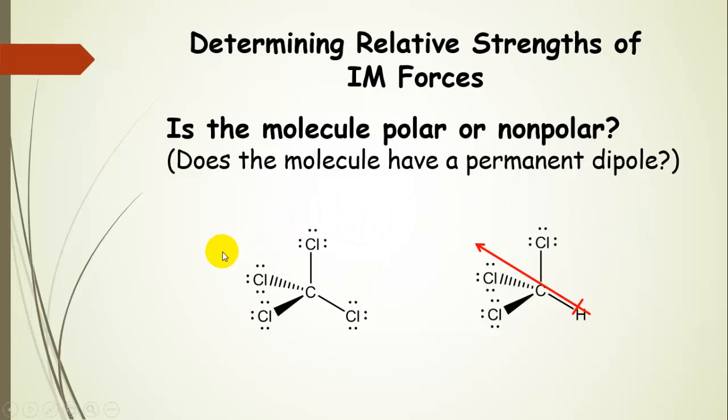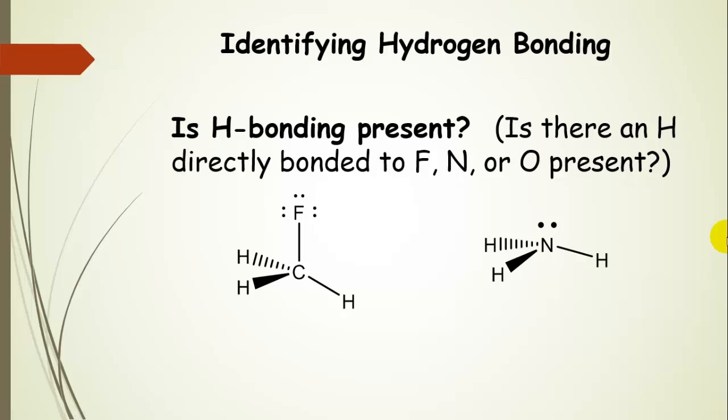This guy doesn't have dipole-dipole interactions, just dispersion forces. This one has dipole-dipole interactions. Another issue is identifying hydrogen bonding. What you're looking for is a hydrogen directly bonded to fluorine, nitrogen, or oxygen. The easiest way to identify it is when you see a hydrogen directly bonded to a highly electronegative element. Ammonia clearly fits that category.